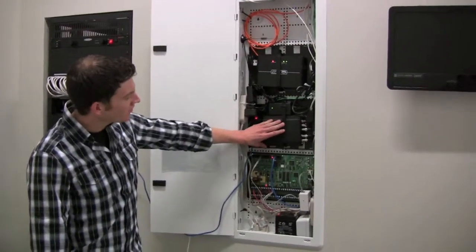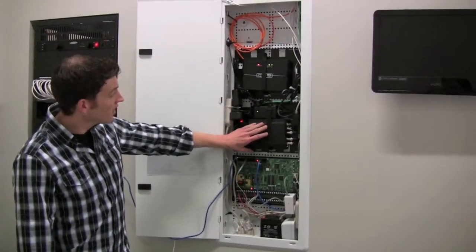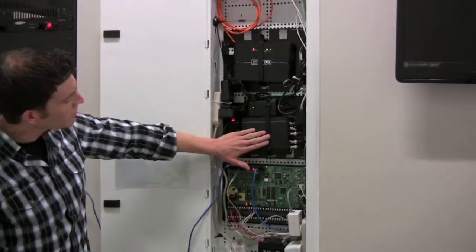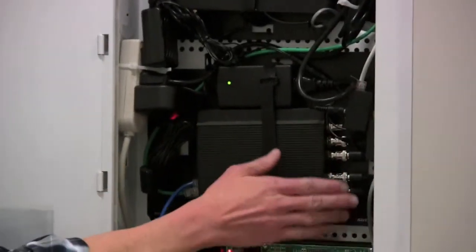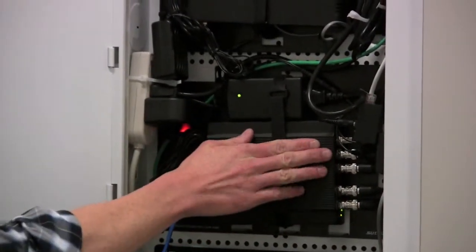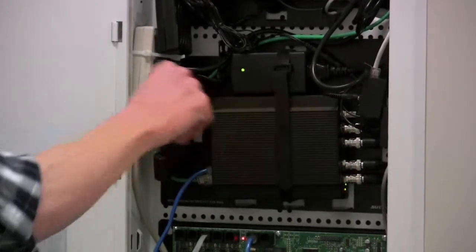This is the HAI Omni-Touch Video Server. As you can see here, we have it mounted to an adjustable rack plate, power source, and connections. It will support up to four cameras, the top output here being an output for a DVR.